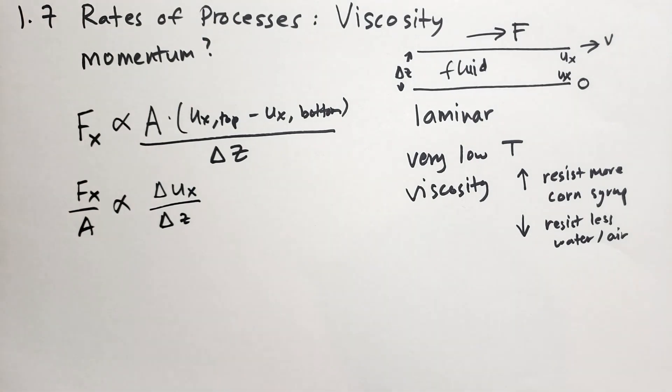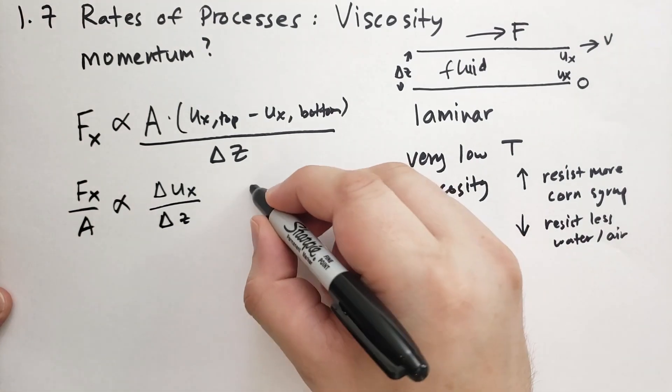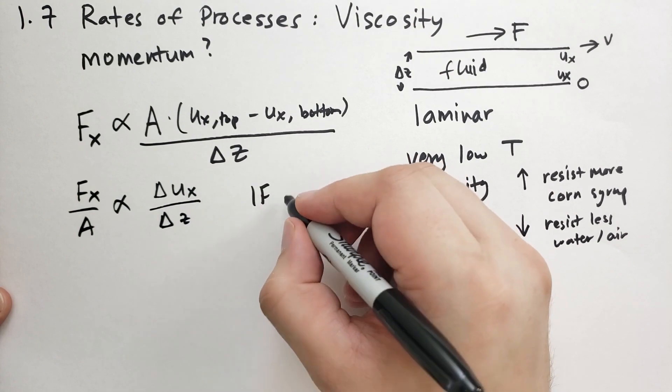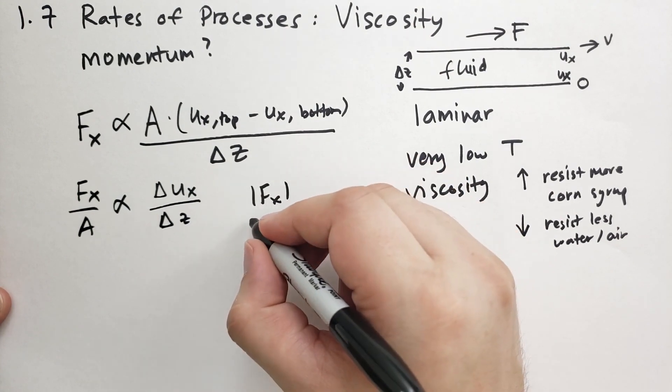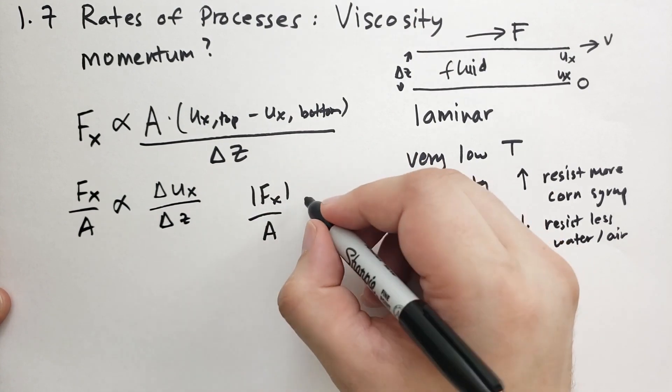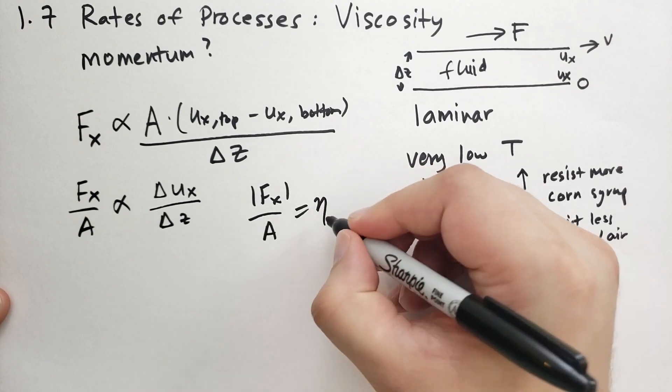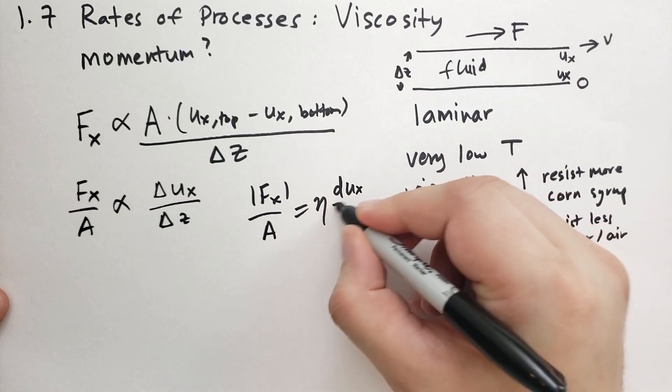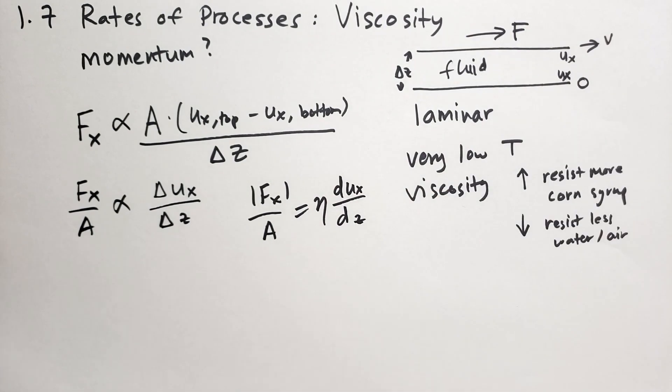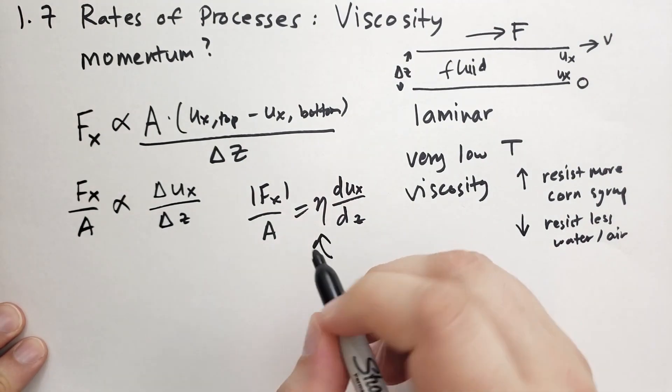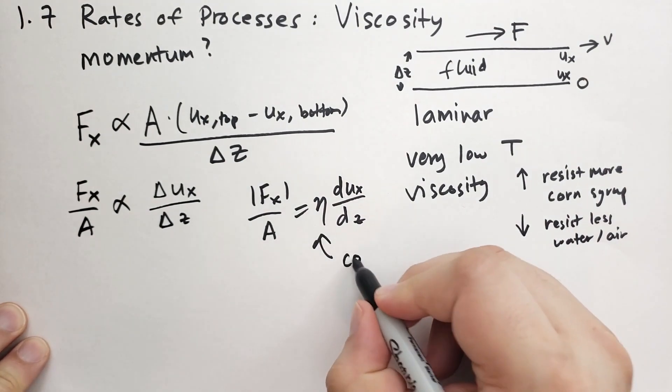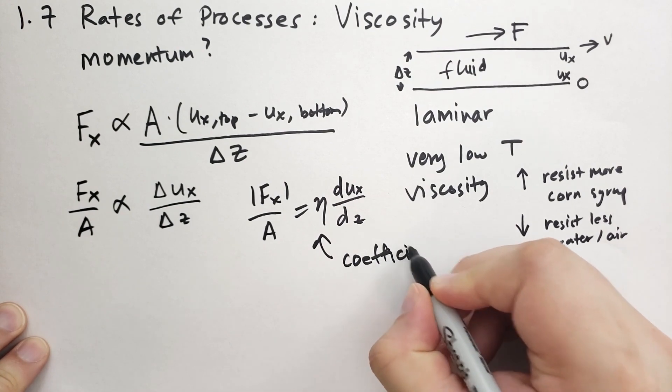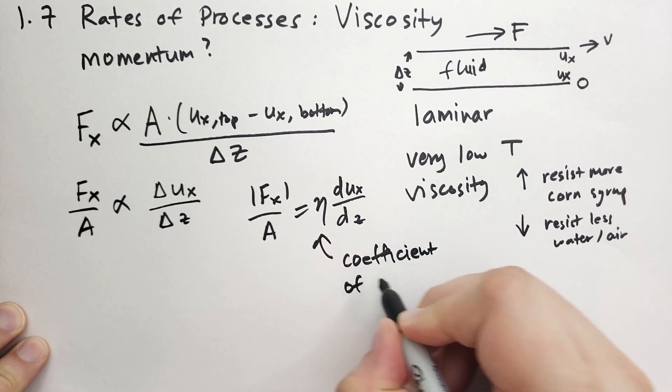Another way to write this is the force in the x direction divided by the area of the plates is proportional to the difference in that velocity of the fluid over the separation between the plates. So we can write a formula where the magnitude of the force in the x direction divided by the area equals this Greek letter eta, the coefficient of viscosity, times du in the x direction by dz.